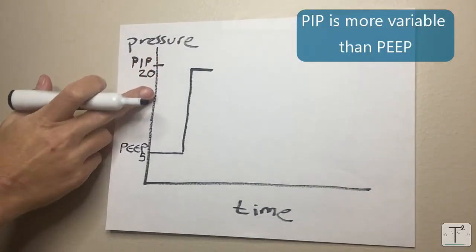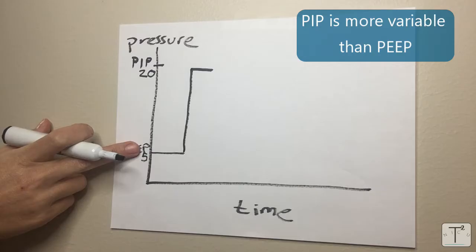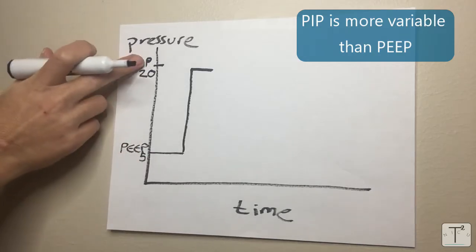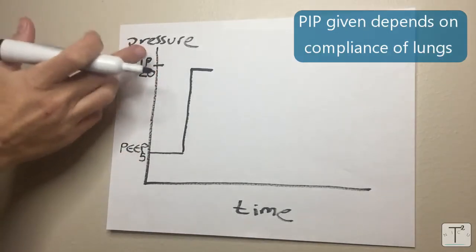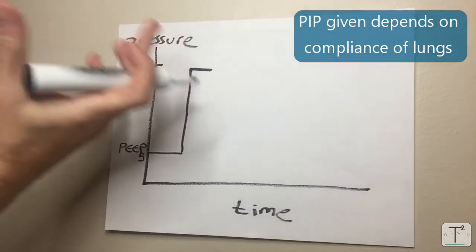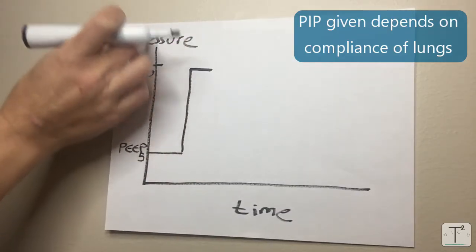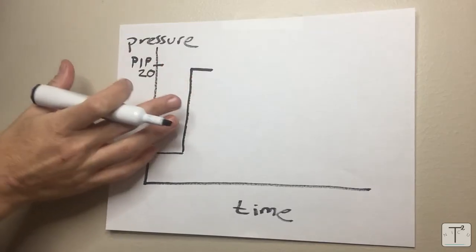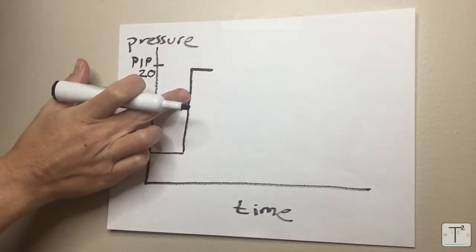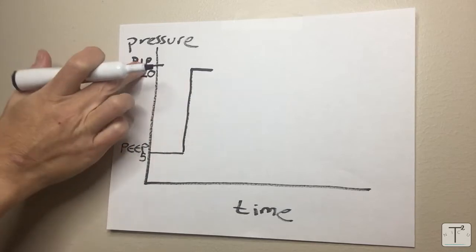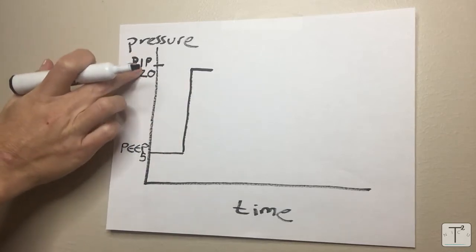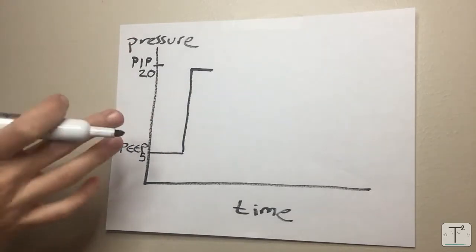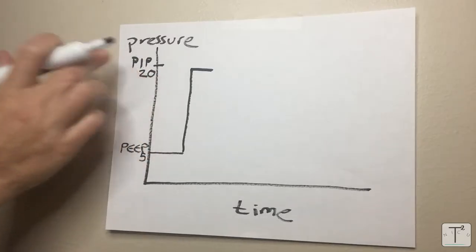The PIP is actually a lot more variable than the PEEP but ultimately the PIP that you want to give will depend on the compliance of the lungs. If the lungs are stiffer then you're going to need a higher pressure to try to open them up. Whereas if the lungs are a lot more compliant then you won't have to give such a high PIP. In this case let's assume our PIP is 20 which is kind of an average, maybe on the lower side PIP for babies.